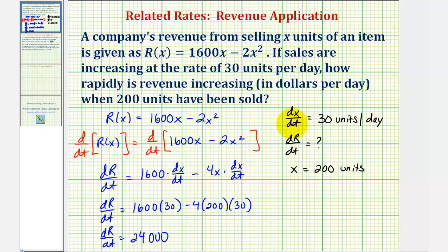When dx/dt = 30 units per day and x = 200 units, revenue is increasing at a rate of $24,000 per day.